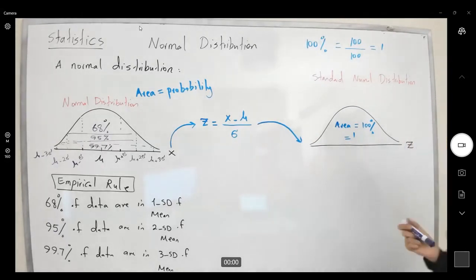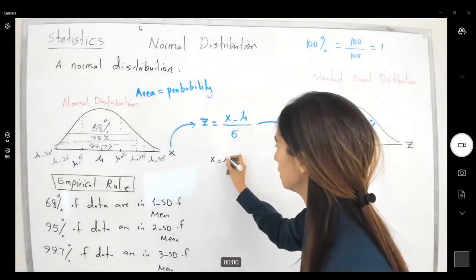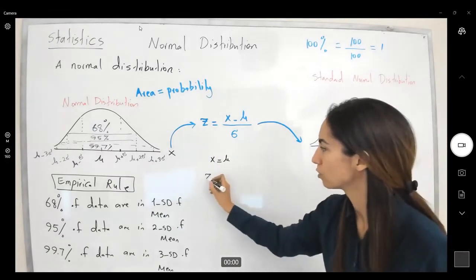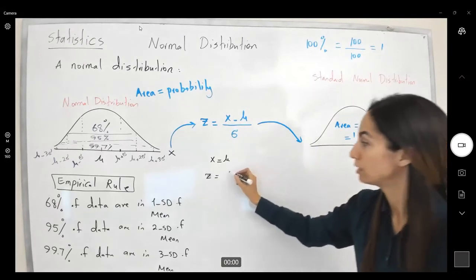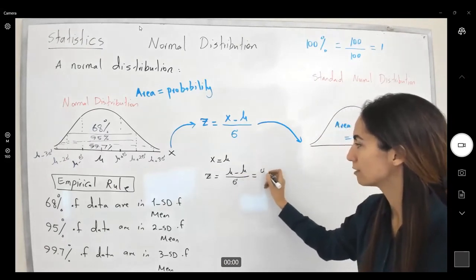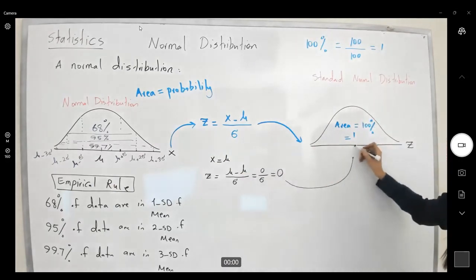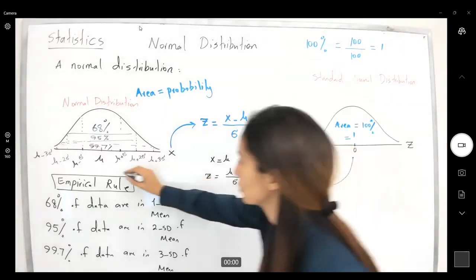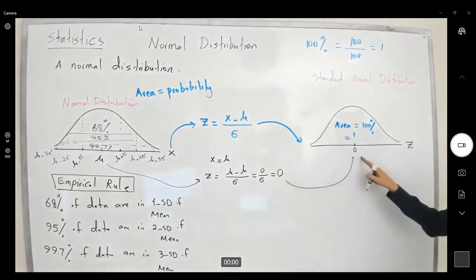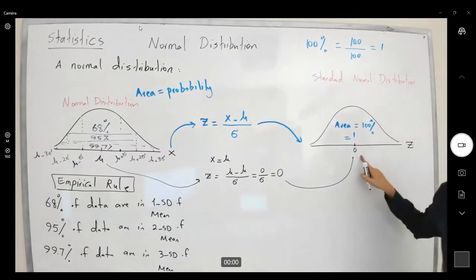Let's start by taking the mean as our x value. My x equals mu. Plugging into the formula: z equals mu minus mu divided by standard deviation, which gives zero divided by sigma, which is zero. So the mean converts to z equals zero. In a standard normal distribution, the mean is always zero.